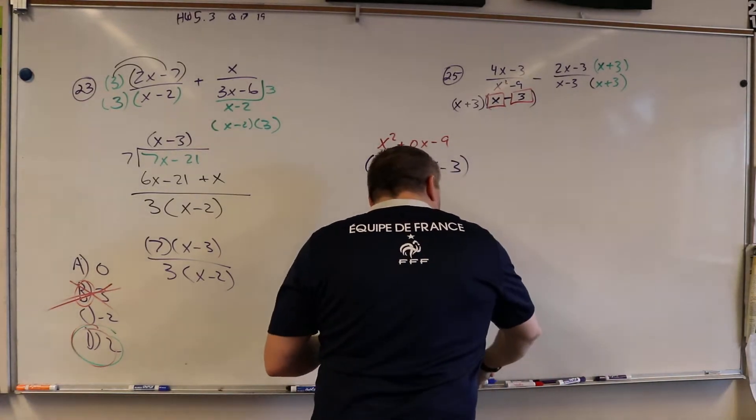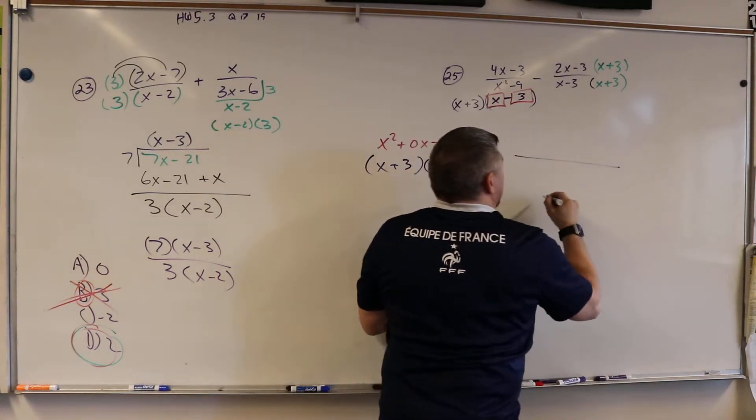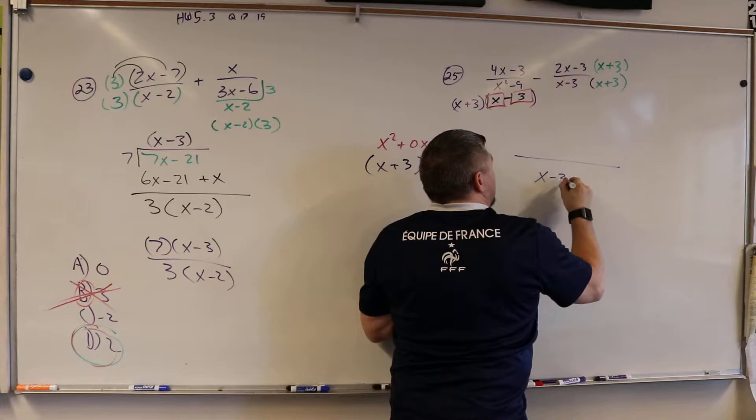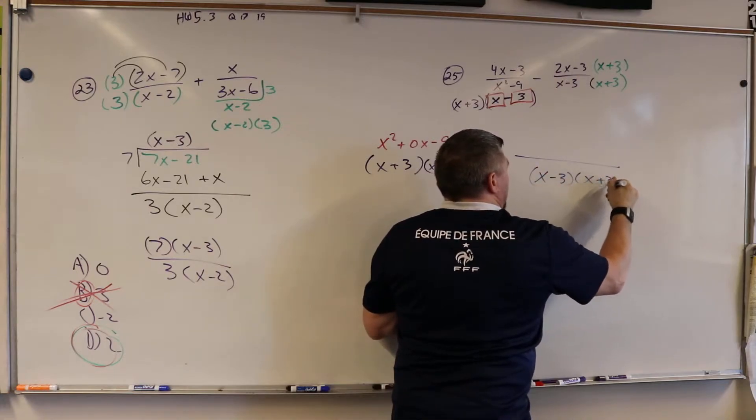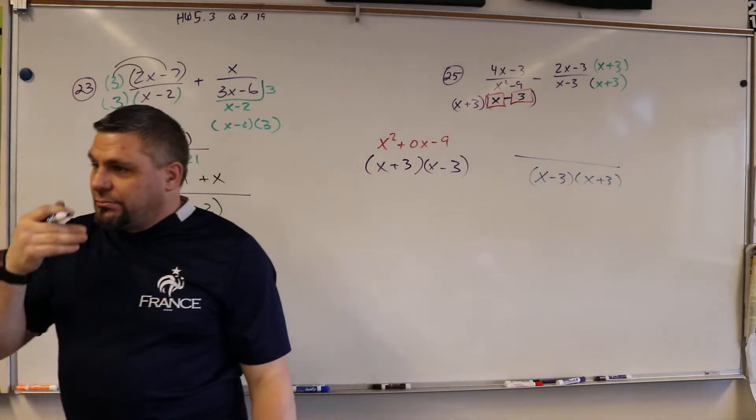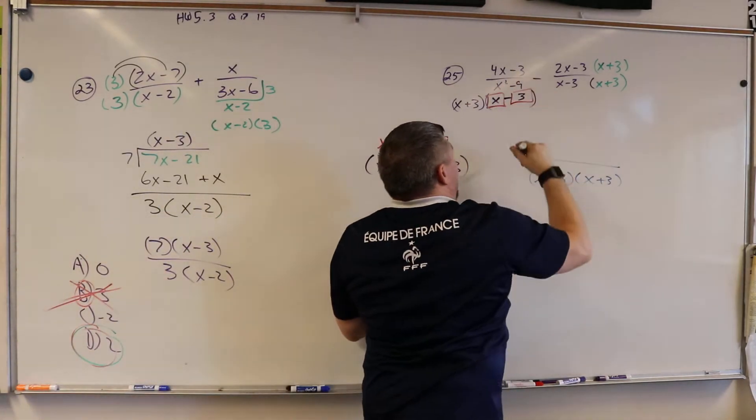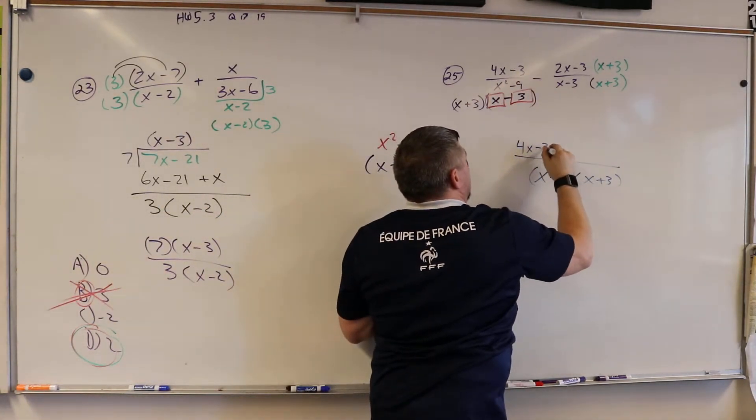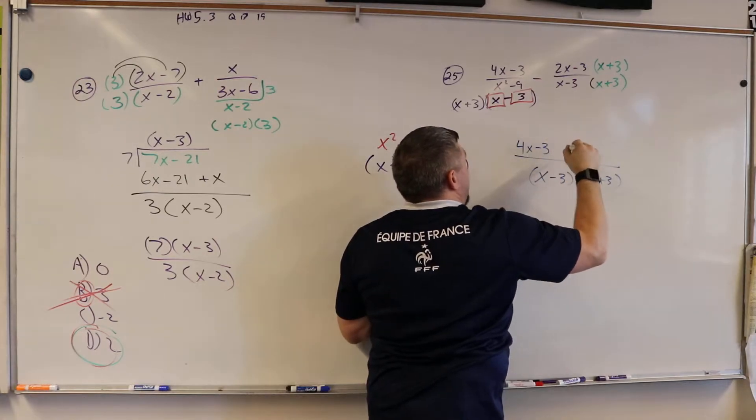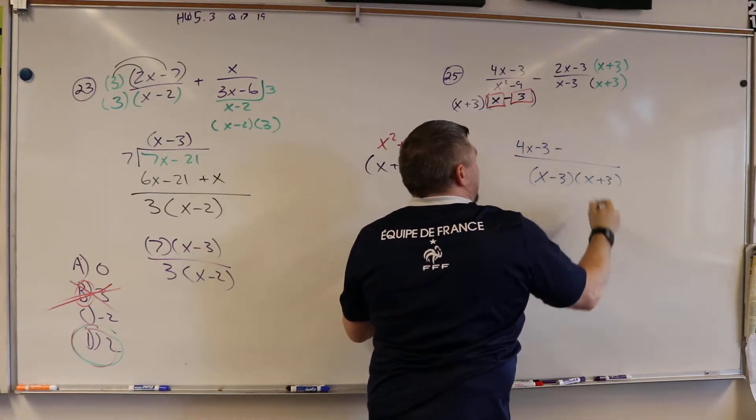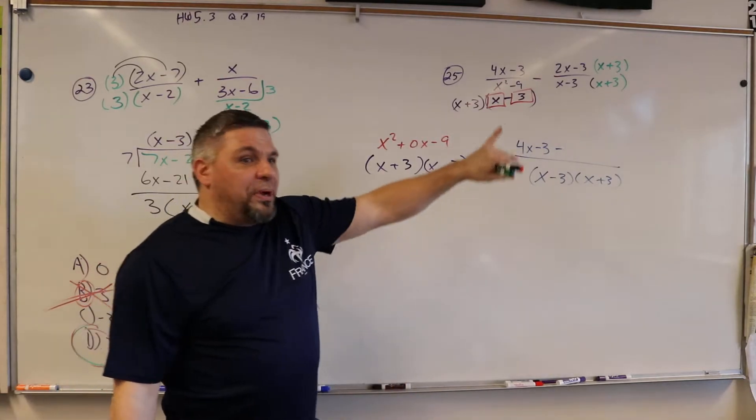so what we have here is x minus 3 times x plus 3 on the bottom, right? But on the top, I have 4x minus 3, and then minus this whole bunch of mess.